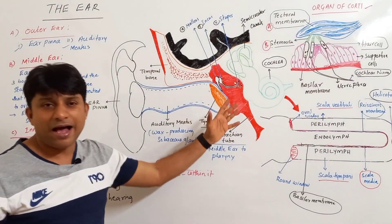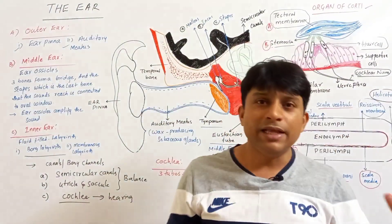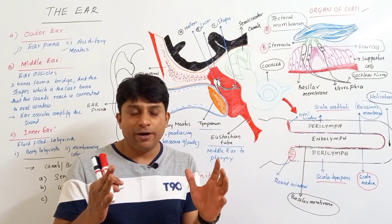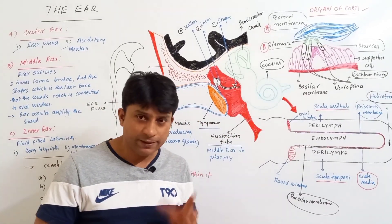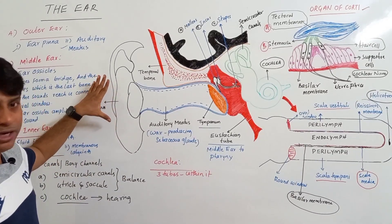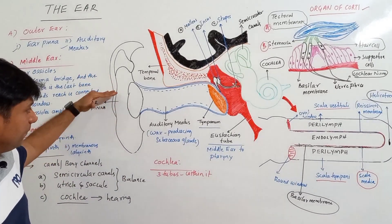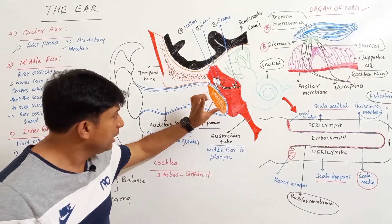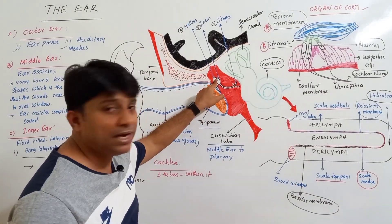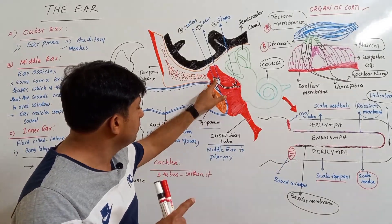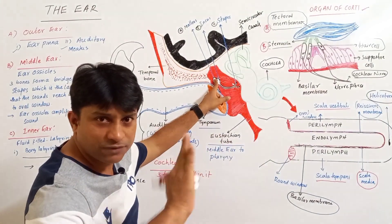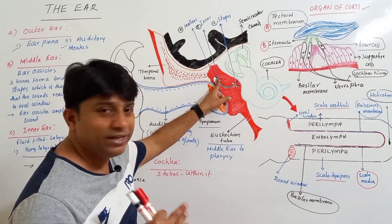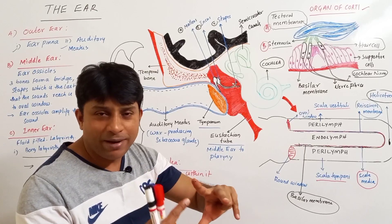Now let us find out the mechanism of hearing — how we can hear sound. Sound vibrations produced in the air travel through the auditory meatus and reach the tympanum or eardrum, which then vibrates. The vibrations of the tympanum are received by the malleus.